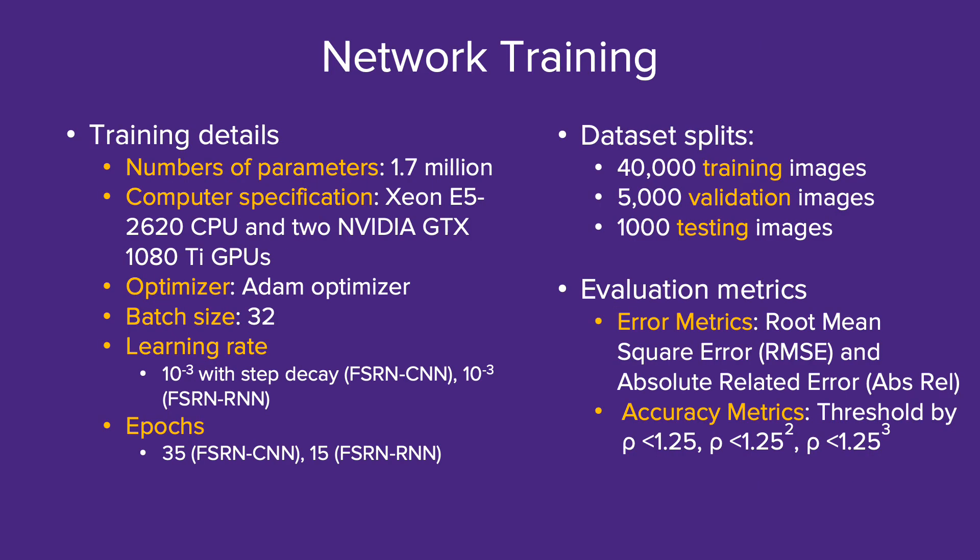We train our network with 1.7 million parameters on 40,000 images from our dataset. The training time is around 6 hours. Our CNN and RNN subnets are trained separately. We first perform synthetic experiments on 1,000 images from our dataset, and our testing images do not overlap with the training ones.